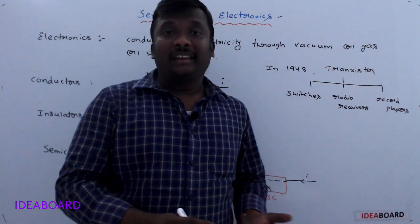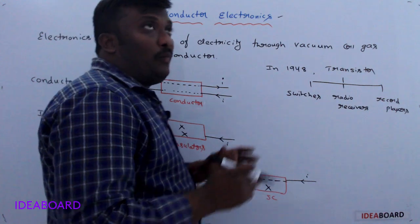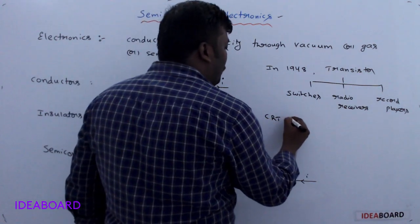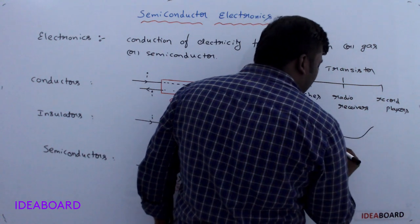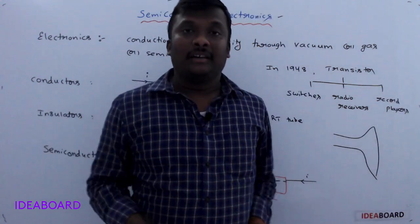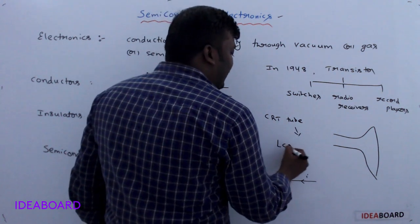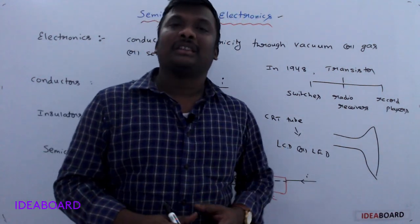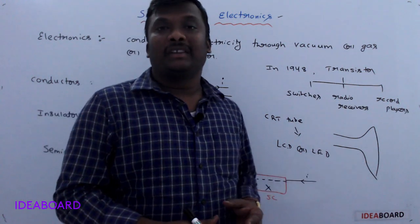Up to around 2010–2012, we were using televisions that were big in size, using CRT (cathode ray tube) technology. But with the development of electronics, these CRT tubes have been replaced by LCDs and LEDs — liquid crystal displays and light-emitting diodes. Now we are using televisions that are very thin, and mostly we use LED TVs and LED monitors. Day by day, electronics has developed because of advancements in semiconductor electronics.